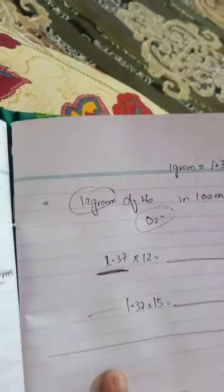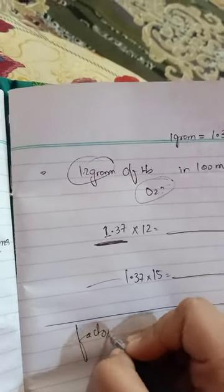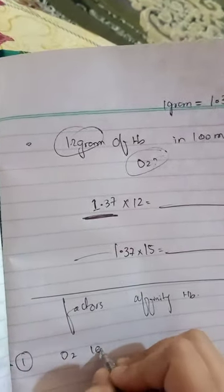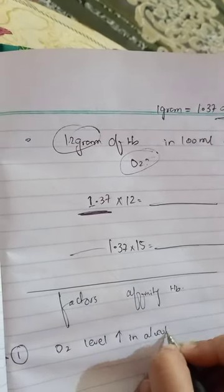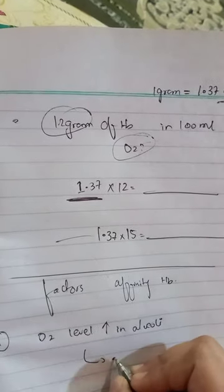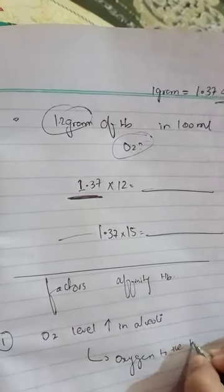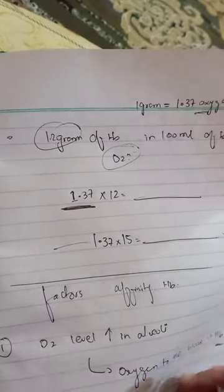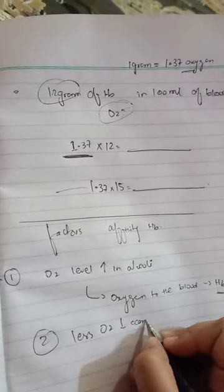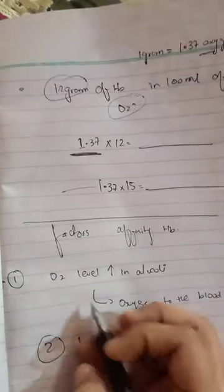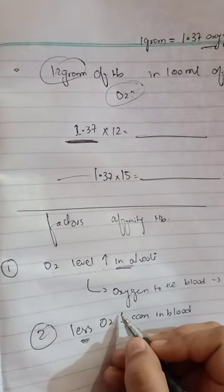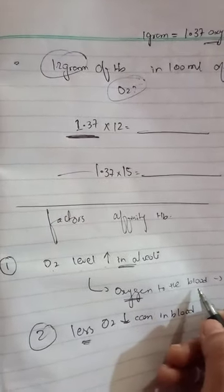Now let's talk about the factors that increase the affinity of hemoglobin for oxygen. For example, if the oxygen level is increased in the alveoli, the oxygen will move to the blood and bind with hemoglobin. Also, if there is less concentration of O2 in blood relative to a higher oxygen level in the alveoli, oxygen will move toward the blood to attach with hemoglobin.